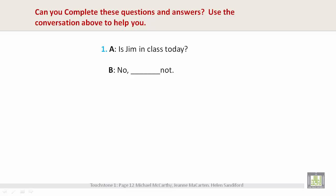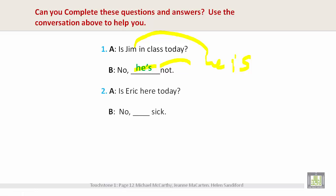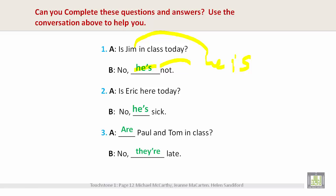Can you complete these questions and answers? Use the conversation above to help you. 'Is Jim in class today? No, he's not.' He's is a contraction of 'he is,' and it's referring to Jim. 'Is Eric here today? No, he's sick. Are Paul and Tom in class? No, they're late.' They're is a contraction of 'they are,' as we learned earlier, and this is referring to Paul and Tom.